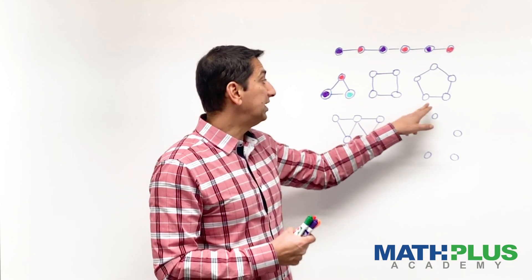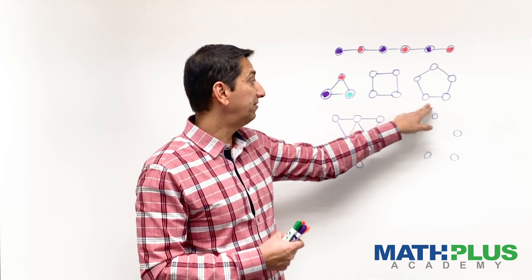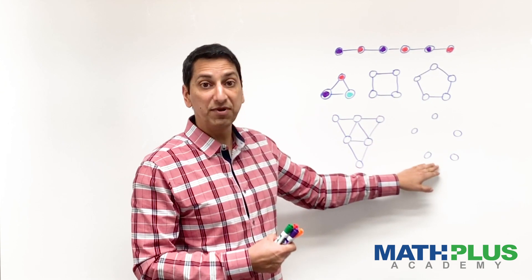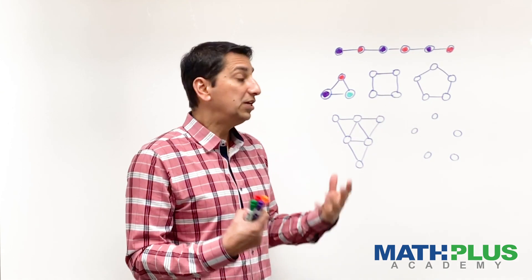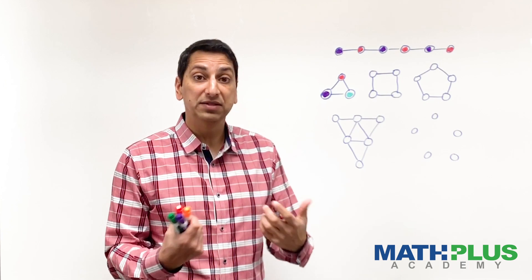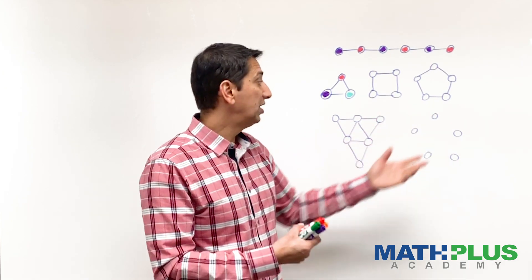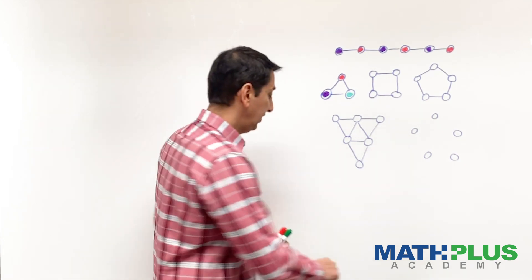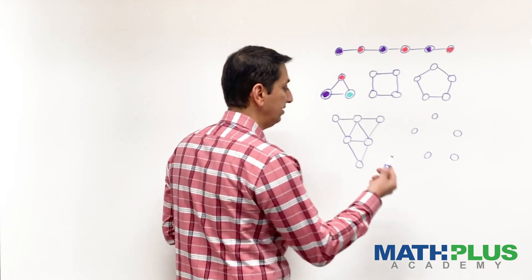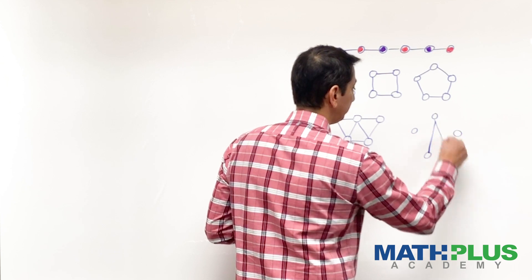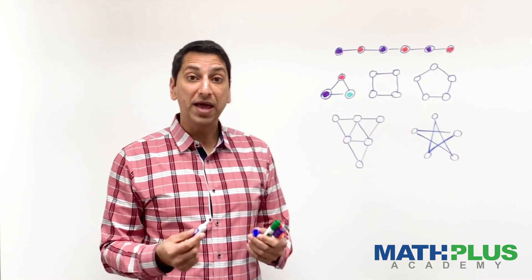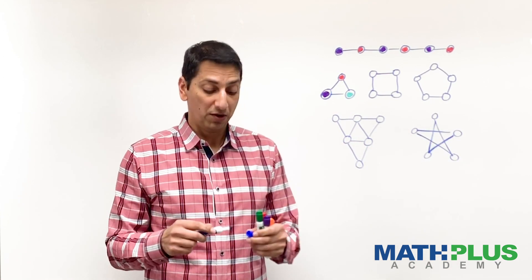Another thing is for any given set of dots, like here I have five, and here I have that same arrangement of five that haven't connected them yet. You might get a different chromatic number. So I'll let you do this one for yourself. But I wonder if I connect them in a different way, maybe like this, will the chromatic number be the same or will it be different?